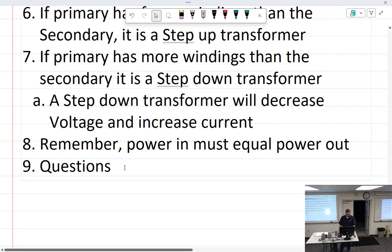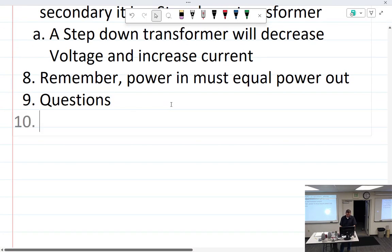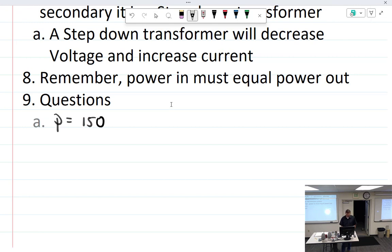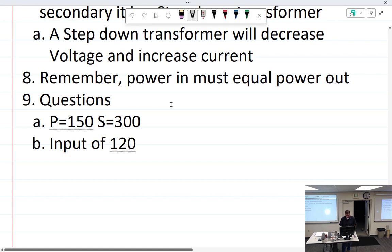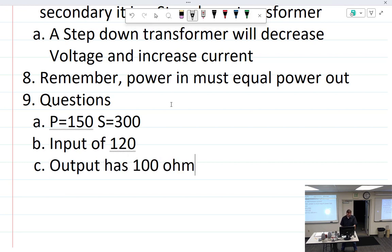All right, we have some questions here to see if we've figured out how this works. Let's see if we had the primary has 150 turns and the secondary has 300 turns. We have an input of 120 volts. I've got output as a 100 ohm load. What is input and output?